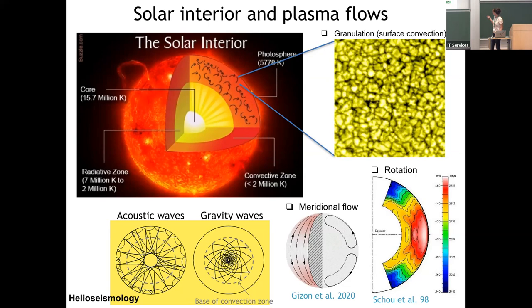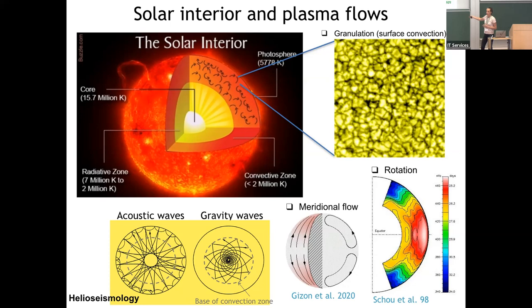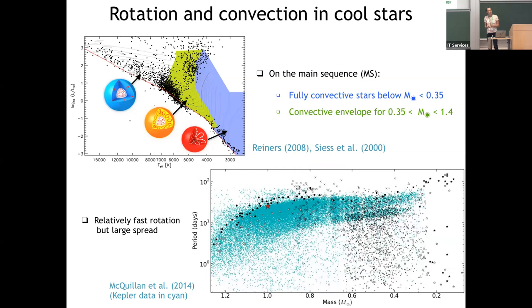There is also quite a lot of observational activity to detect poloidal flows in the sun. We know there is a meridional circulation, a large-scale flow in the poloidal plane, but we don't know exactly the structure of this flow very deep down because it's very difficult to measure — it's very weak compared to rotational effects on the waves. Now helioseismology is starting to infer this meridional flow profile up to about 0.8 to 0.85 solar radii.